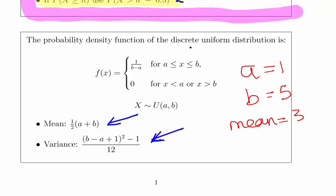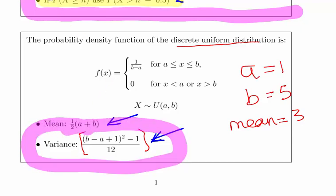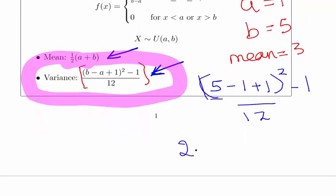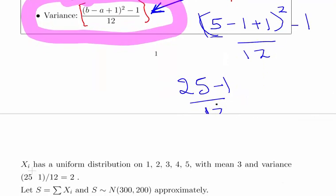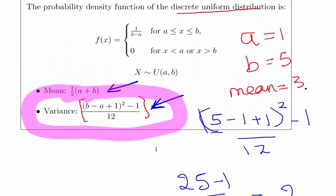The variance for a discrete uniform distribution is (b minus a plus 1) squared minus 1, all over 12. That is slightly different from the continuous uniform distribution, so watch out for that. The variance is (5 minus 1 plus 1) squared minus 1 over 12, which gives us 25 minus 1 over 12, that equals 2. The mean equals 3, the variance equals 2.